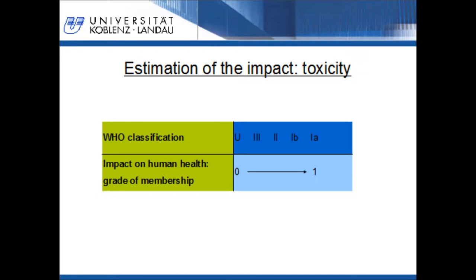In the following part of this presentation, I will give you an example of how the impact on the human health of a pesticide applicator can be estimated based on the toxicity of the used substance and the exposure. First, we have to rate the used pesticide by its hazard to human health. The WHO classifies pesticides in five classes, from U to 1A. U means unlikely to present acute hazard; 1A means that a pesticide is extremely hazardous. The classification is based on the LD50 for rats. LD50 stands for lethal dose 50, the dose where 50% of organisms in a rat population die. With this value, the impact of substances on mammals is estimated. According to the WHO classification, we can rate the hazard of the used pesticide with a value between 0 and 1.